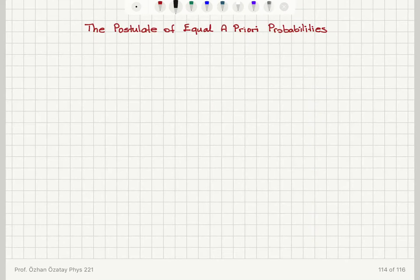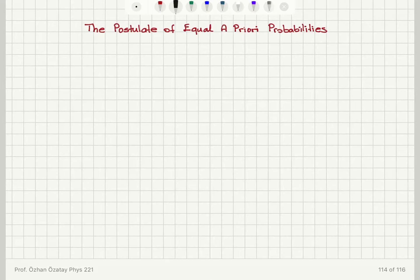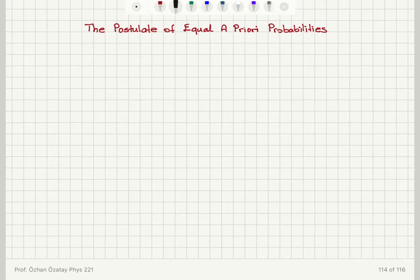Now we're going to talk about the statistical postulates. The first and most important postulate for us is the one related to equilibrium: the postulate of equal a priori probabilities. We talked about another statistical postulate, for example in the case of tossing coins — we said that the probability of landing heads or tails uppermost should be the same because of symmetry. The center of mass is right in the middle, there is no preference, so this would be a postulate for statistical purposes.